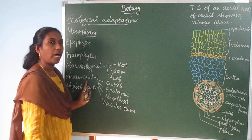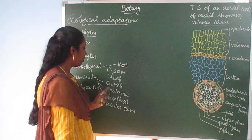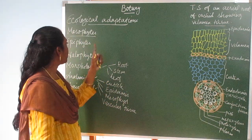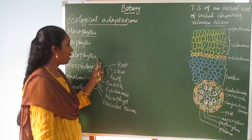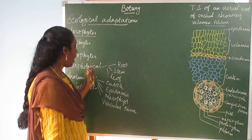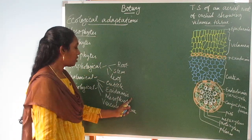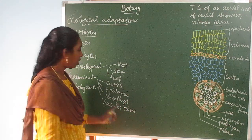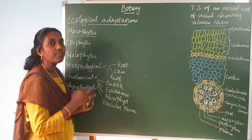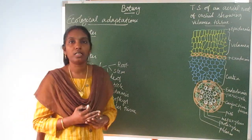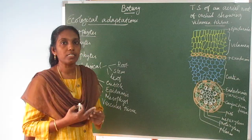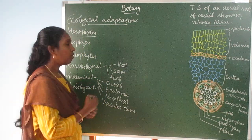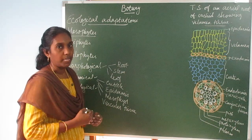Under anatomical adaptations, you write about the cuticle in mesophytes, in epiphytes, and in halophytes, then the epidermis, the mesophyll, and the vascular tissue. Finally, physiological adaptations — you know there are a number of physiological processes taking place in the body of a plant, and you will study how these processes take place.